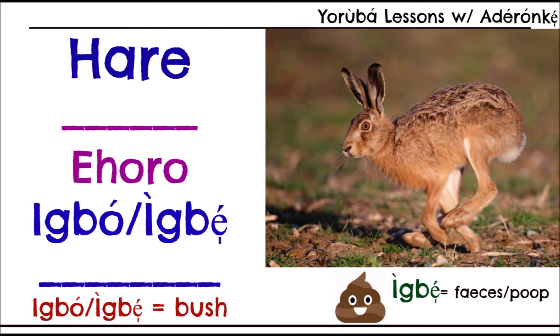How do you differentiate between rabbit and hare, since both are 'eoro' in Yoruba? You can say just 'eoro' for either, but if you want to emphasize the wildness of the hare, you can say 'eoro igbo' or 'eoro igbe.' 'Igbo' means bush or forest, and 'igbe' also means bush or forest — so both apply.